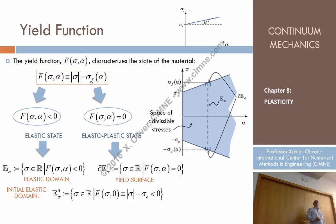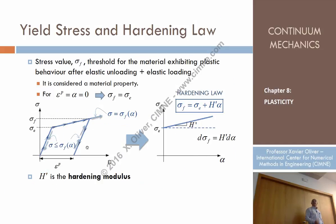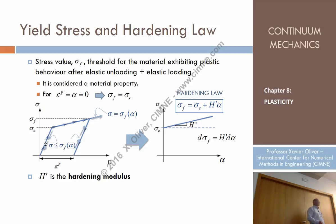Let's interpret this. When F is smaller than zero, the modulus of the stress is smaller than the yield stress, meaning the material is in the elastic branch. For example, if the stress is at some value and the yield stress is sigma_e, then stress minus yield stress is negative — the material is in the elastic branch.